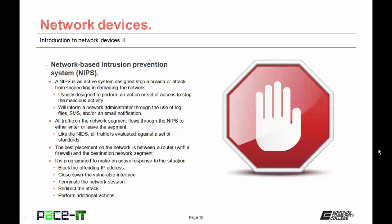All traffic on the network system is required to flow through the NIPS to either enter or leave the segment. Like the NIDS, all traffic is evaluated against a set of standards, and the NIPS uses the same standards as the NIDS. The best placement on the network is between a router, which hopefully has a firewall, and the destination network segment. The NIPS is programmed to make an active response, which could include blocking the offending IP address, closing down the vulnerable interface, terminating the network session, or in more advanced systems, redirecting the attack to a honey net.